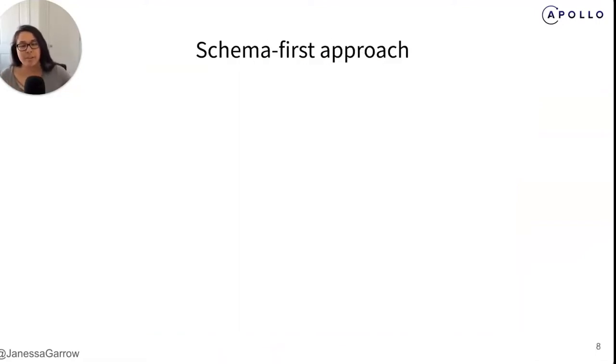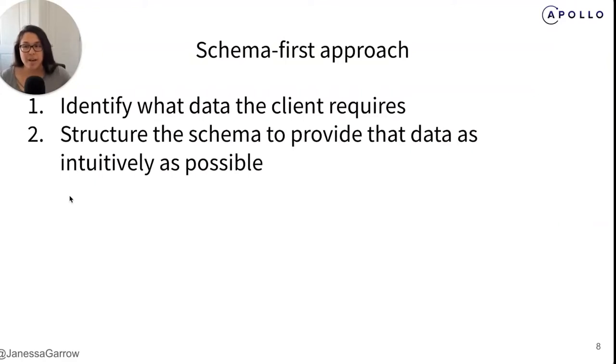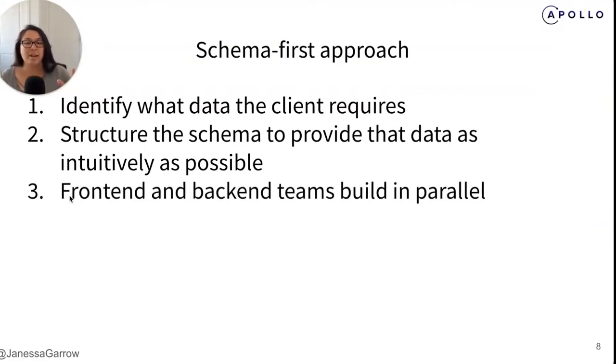When building an app or a feature with GraphQL, it's best practice to use a schema-first approach. With this approach, we want to implement our app or our feature based on the exact data that we need. As a first step, we want to define our schema to identify which data our feature requires. Then we can structure our schema in a way that can provide that data to our client as intuitively as possible. Then we can build out the front end and backend implementations in parallel. The backend team can build out the API using the schema as the source of truth for the shape of the data they should be providing. And the front end team can use that same schema to create accurate mocks while waiting for the API to be available. A schema-first approach like this helps speed up development and helps keep everyone aligned on the needs of the client.